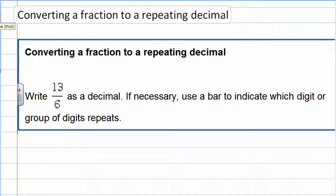Converting a fraction to a repeating decimal. We're asked to write 13 sixths as a decimal, and we're told, if necessary, use a bar to indicate which digit or group of digits repeats.